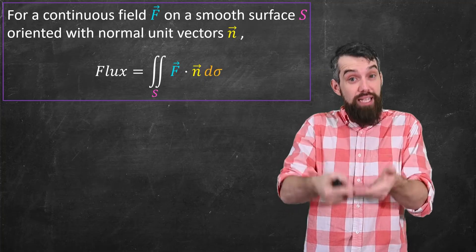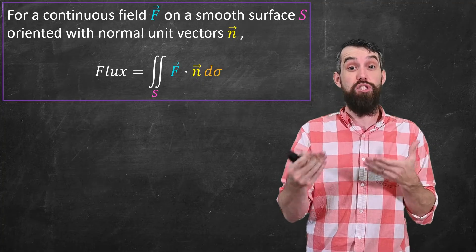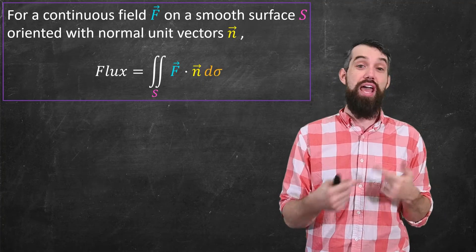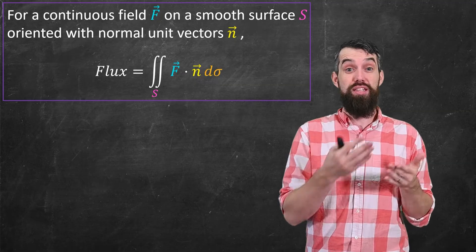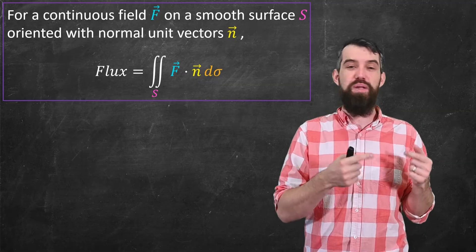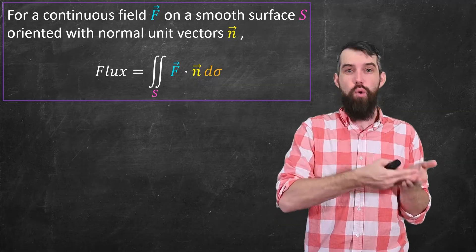In other words, it's integrated d sigma. d sigma is my little element of surface area. My assumptions are that I have a continuous field f together with a smooth surface s that's being oriented in some way by the normal unit vectors.